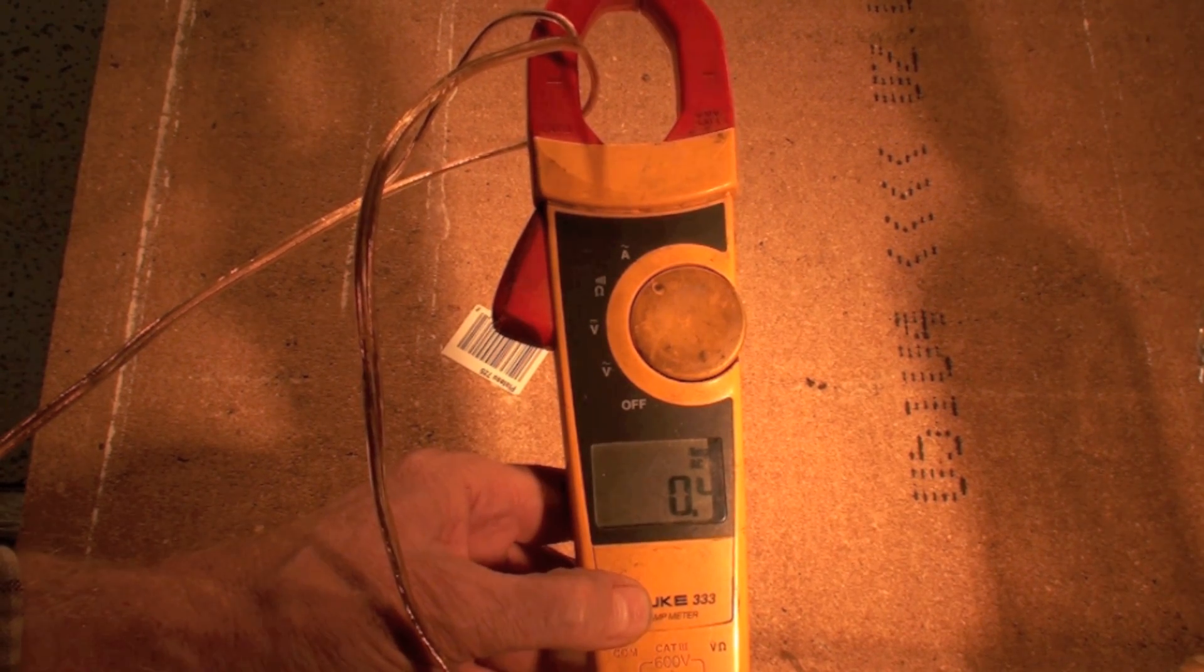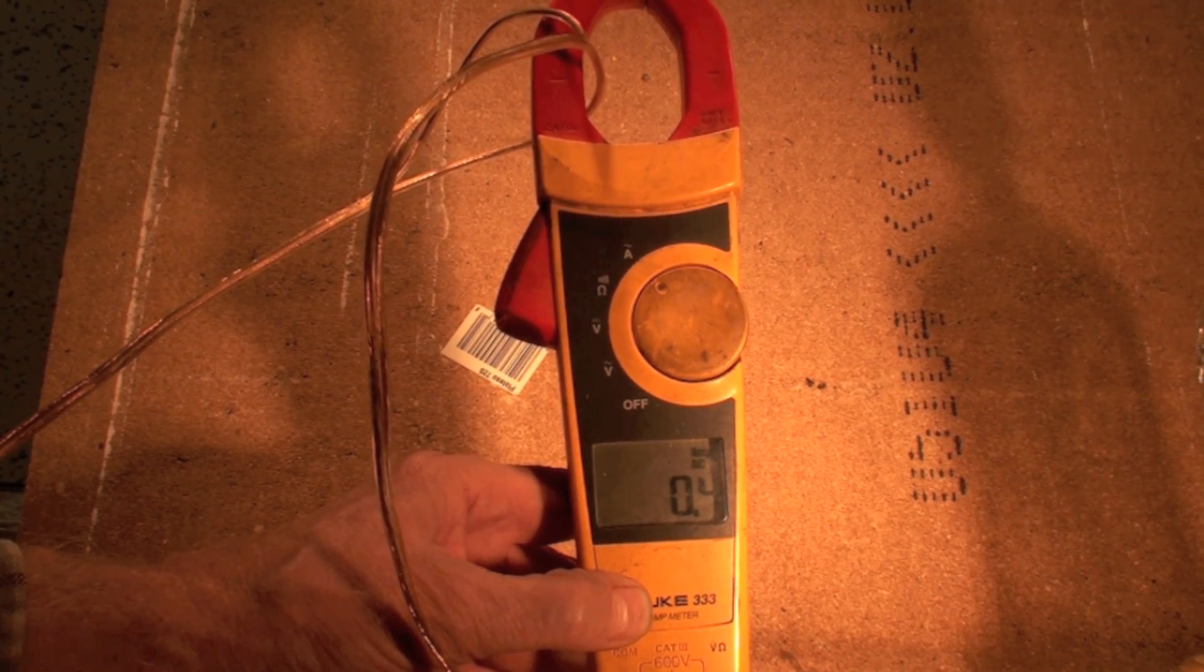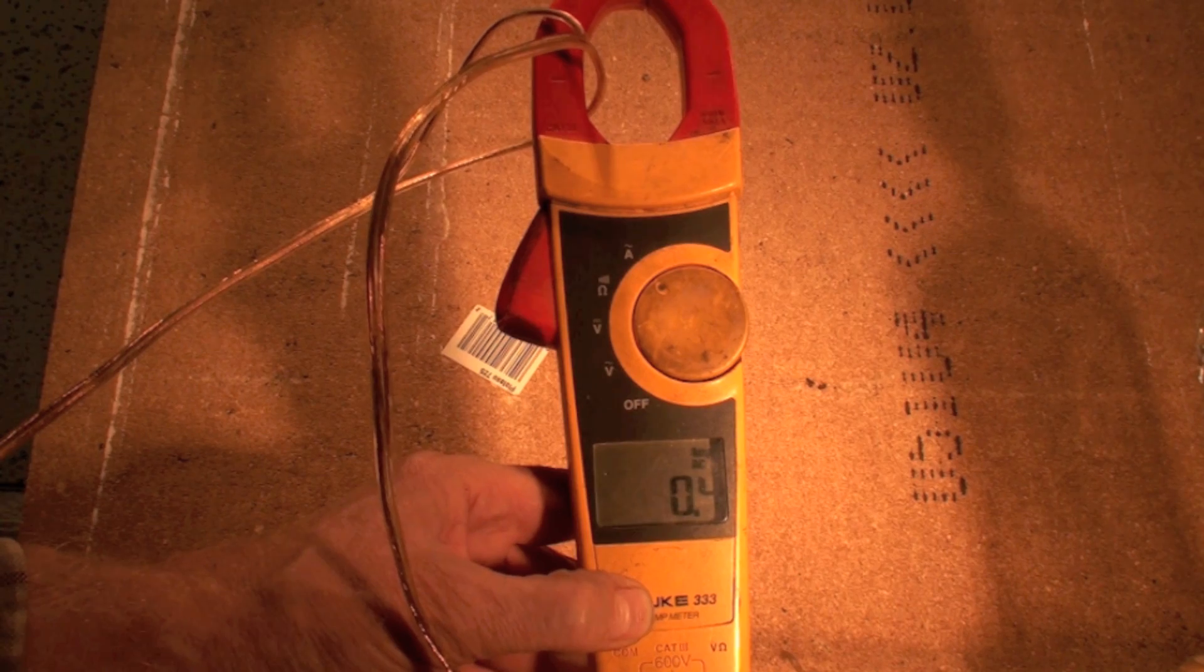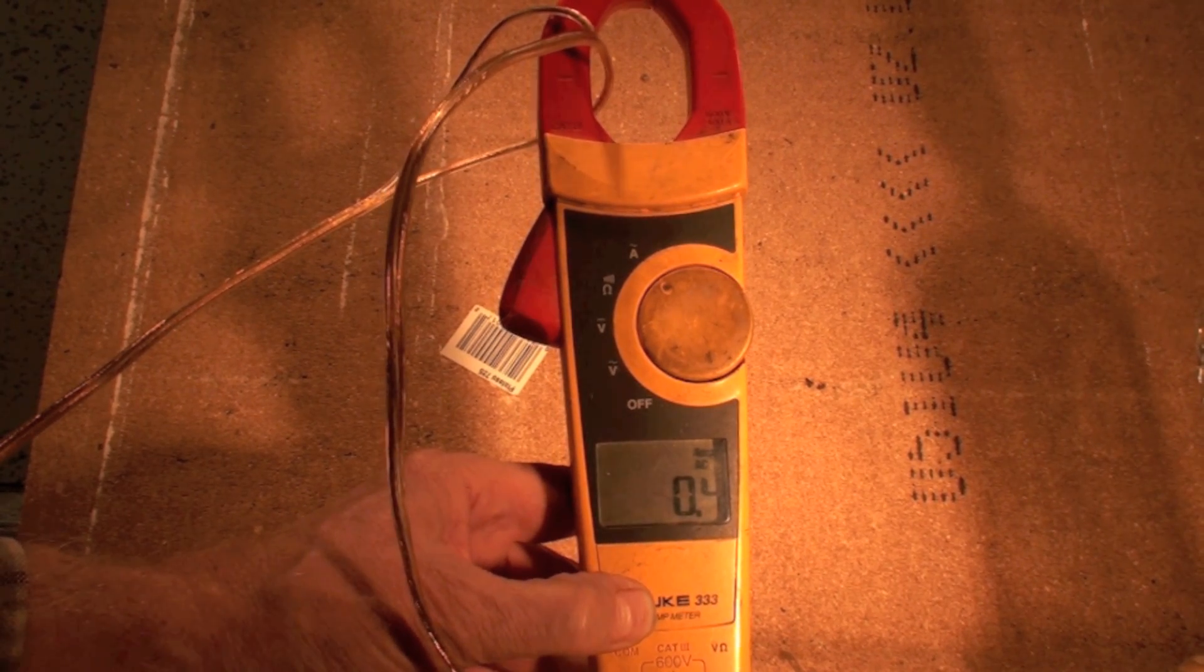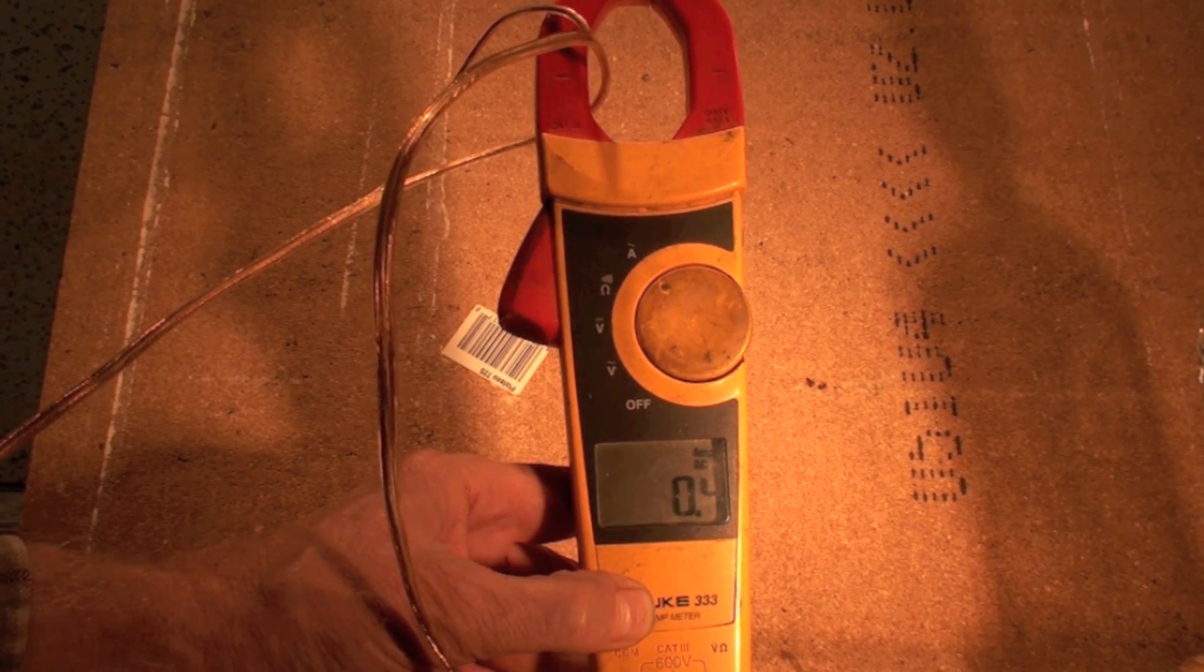That is the auto-ranging clamp meter. You've noticed we have not had to put any range in any of this stuff - we just put it on and it goes. By far the easiest type of meter to read. That is the AC clamp meter which is also a multimeter.